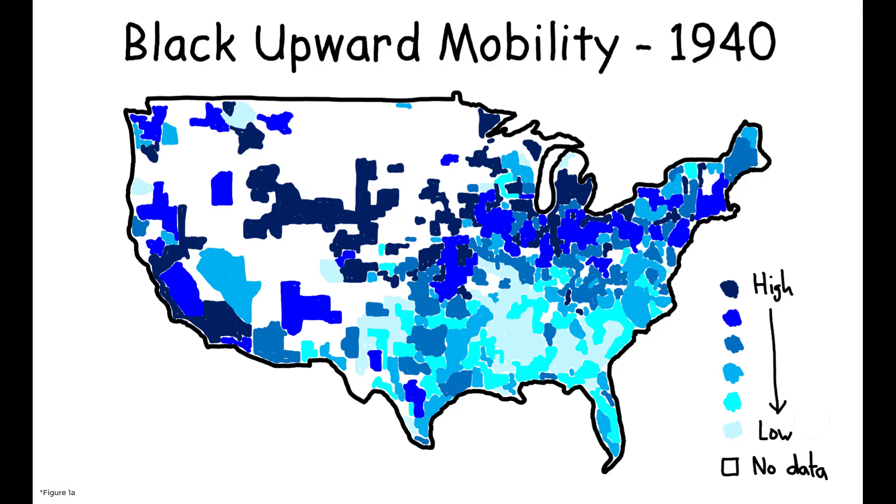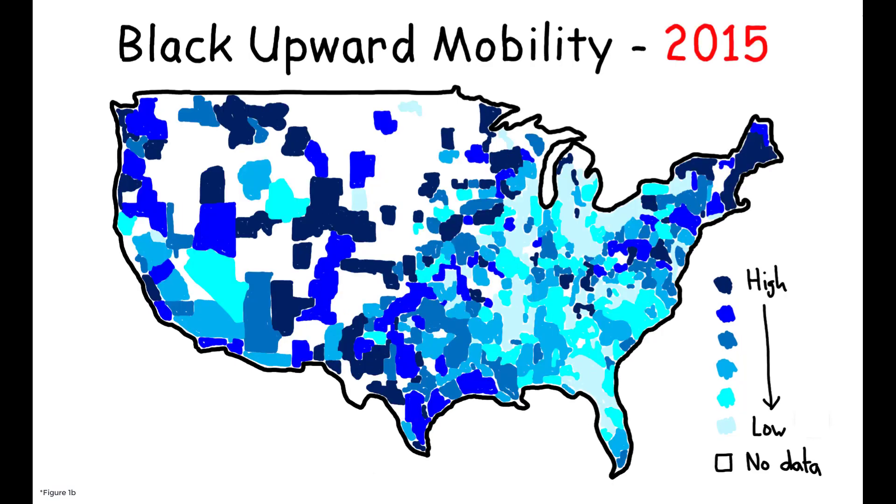What impact did this large in-migration have on destination cities in the north? The author points out that the current geographic distribution of black upward mobility in the US looks very different from that of 1940.